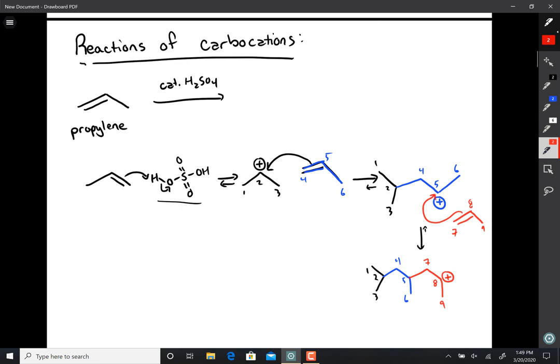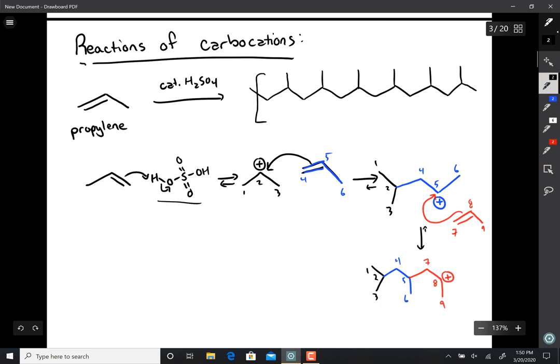And this process goes on and on and on until you get basically these rather large molecules. And this is called polymers. And these polymers are repeating units of the same thing over and over again thousands and thousands of times. This particular polymer, since our starting material is propylene, this is polypropylene, which is used in a lot of plastics such as plastic bottles, that kind of thing.